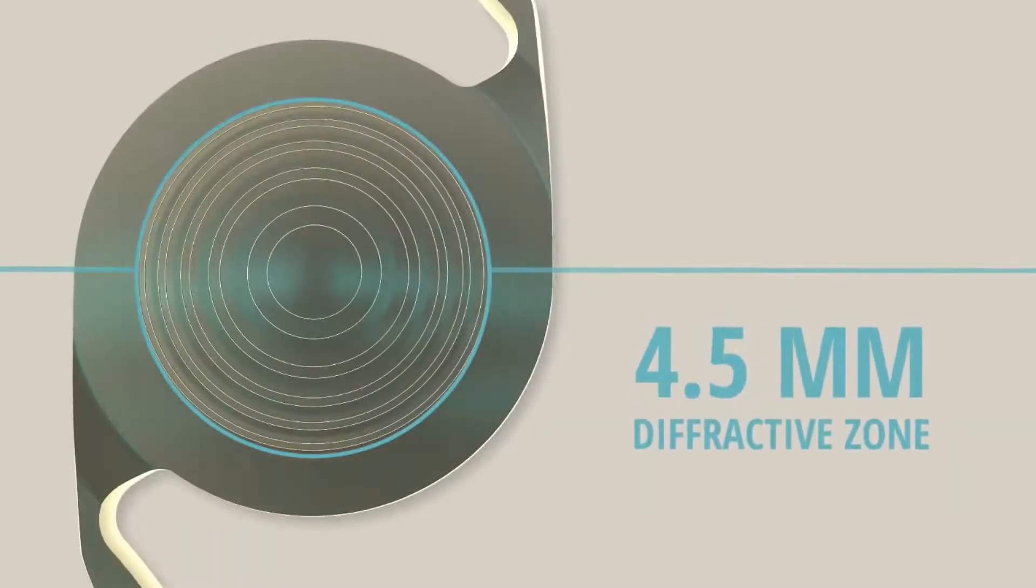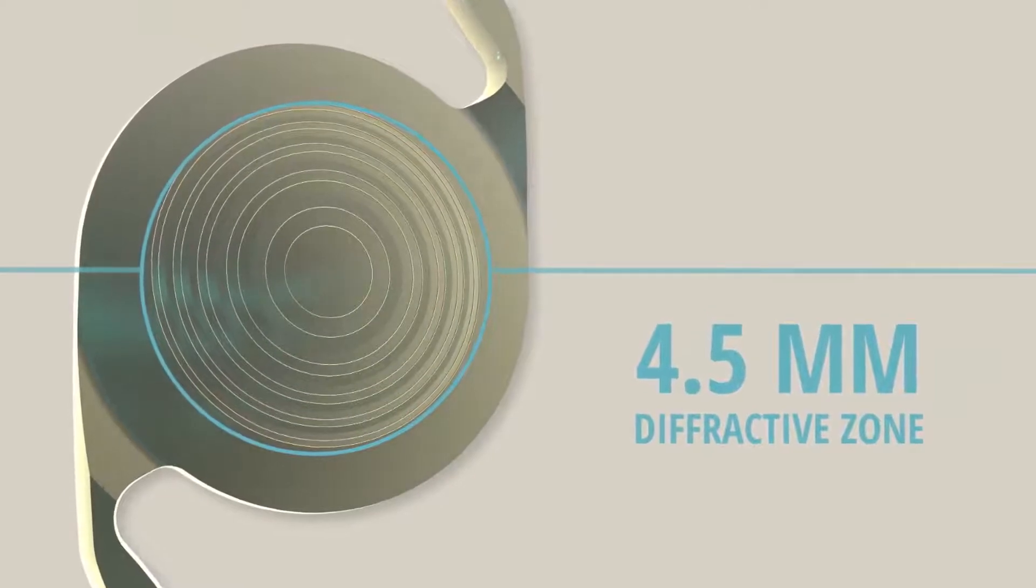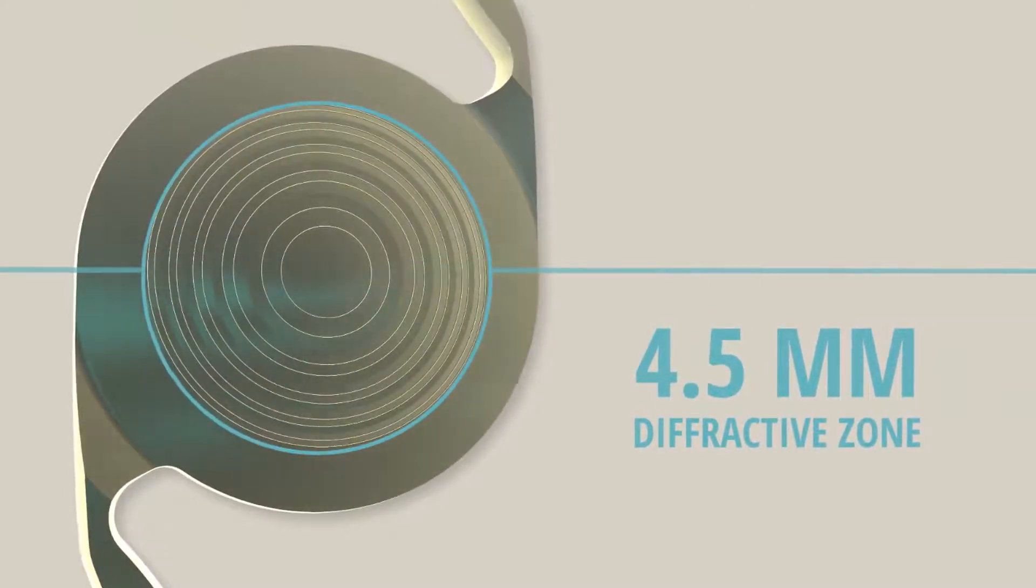Featuring a 4.5 millimeter diffractive zone, Enlighten Optical Technology helps reduce dependence on pupil size in different lighting conditions.